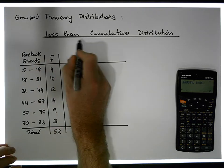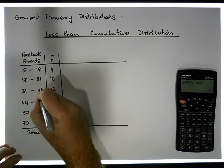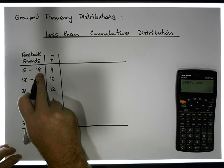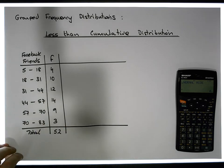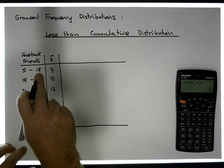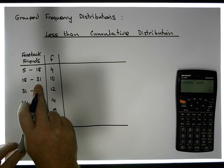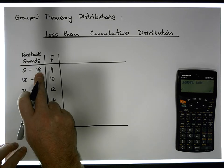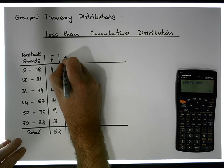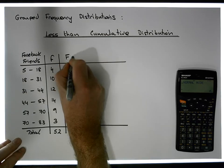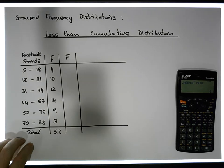The less than version of a cumulative distribution always deals with the upper bounds of the classes. The question we're always asking is: how many observations are less than the upper bounds of the classes? 'Less than' is the key word. A cumulative distribution is always represented using an uppercase F. So this is going to be our less than cumulative distribution.